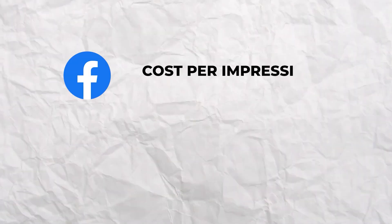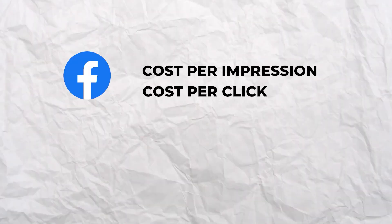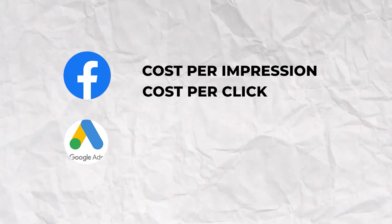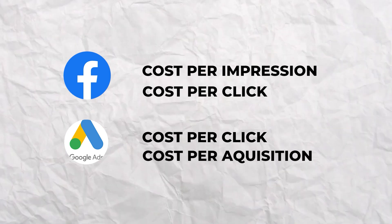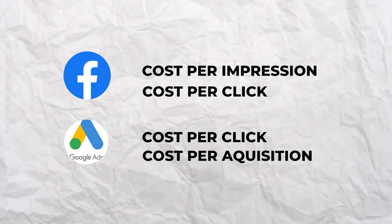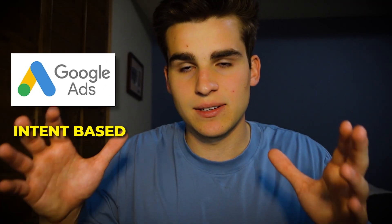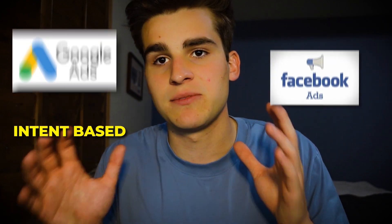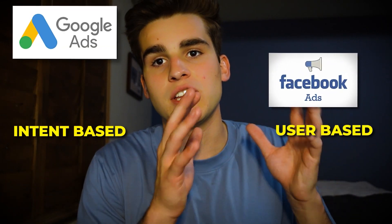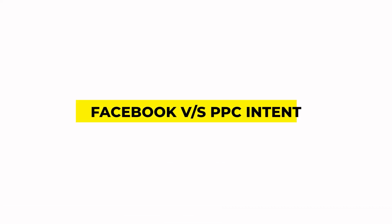Facebook goes by cost per impression and cost per click, whereas PPC goes by strictly cost per click and cost per acquisition. So PPC is much more intent-based and Facebook is much more user-based. Facebook tries to pair you with the perfect audience, and PPC tries to pair you with high-intent users. That leads us into our next point, which is intent.